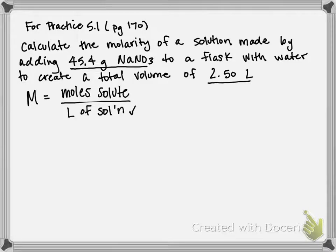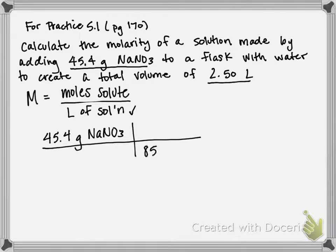So to go from grams to moles, we're going to take 45.4 grams sodium nitrate, and we're going to divide by its molar mass. That should give us our answer in moles. So sodium's molar mass, if you add sodium plus nitrogen plus three oxygens, you should get roughly 85 grams sodium nitrate per one mole sodium nitrate.